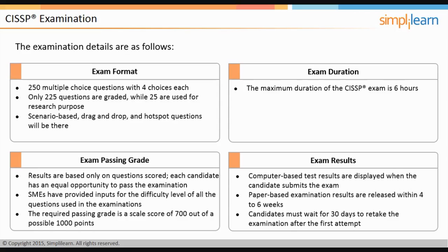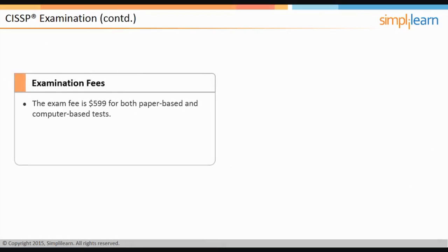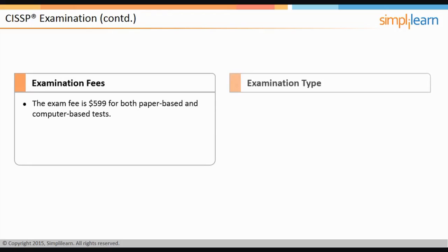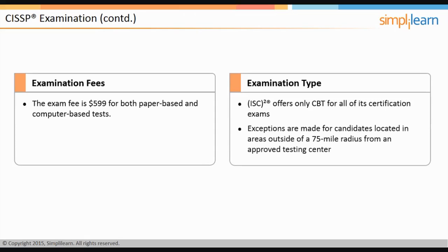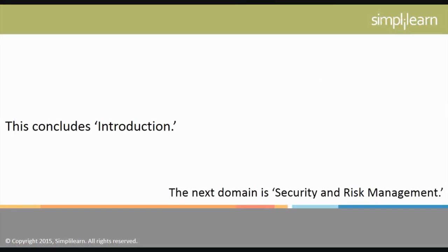The exam fee is US $599 for both paper-based and computer-based tests. From September 1, 2012, ISC² offers only computer-based testing, or CBT, for all its certification exams. For candidates located more than 75 miles from an approved testing center, a paper-based exam is offered on a case-by-case basis. This concludes the introduction; the next domain is Security and Risk Management.